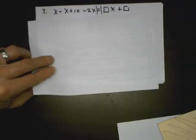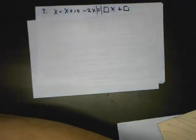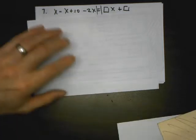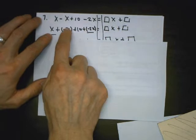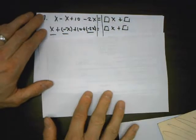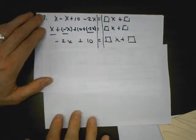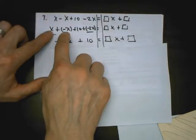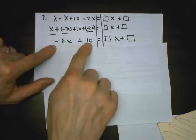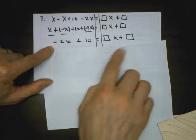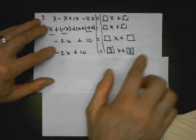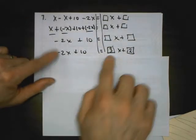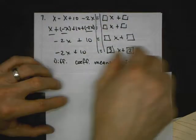Equations 3 and 4 had infinitely many solutions. For number 7, we simplify the left side first. If I have x plus a negative x and two more negative x's, those two cancel out, so I have negative 2x left plus 10. On the right side, plugging in 3 for the first box and 2 for the second box, I can compare. I have different coefficients — that means there's going to be one solution. Different coefficients always means one solution.